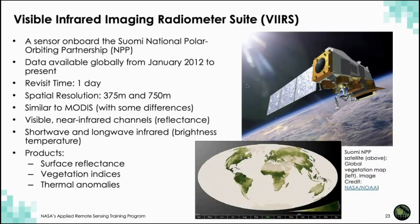The Visible Infrared Imaging Radiometer Suite, or VIIRS, is a follow-on to MODIS with a few updates. These data are available from 2012 to present, with a slightly improved spatial resolution of 375 meters for one channel, and 750-meter products are also available. VIIRS data can be used for similar mapping of vegetation changes and thermal anomalies — it's great for mapping currently burning fires. VIIRS has also been used for mapping nighttime lights, which has been used for population mapping, and that layer is available in the UN Biodiversity Lab as well.